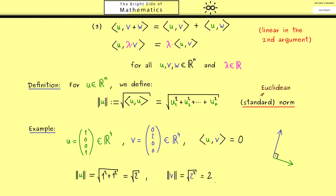So v is longer than u. Even in higher dimensional spaces like R4 we are able to talk about lengths of vectors. Such abstractions really help us to generalize concepts, and this is what we will do throughout the course. Before we do that in more detail, I want to tell you about another product we have in R3 — a very special product that we will consider in the next video. I hope to see you there. Have a nice day and bye!